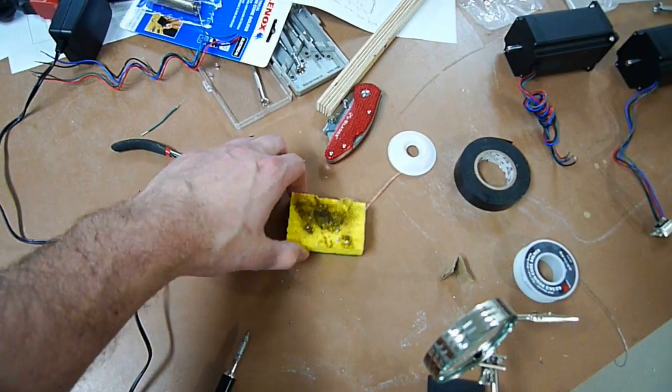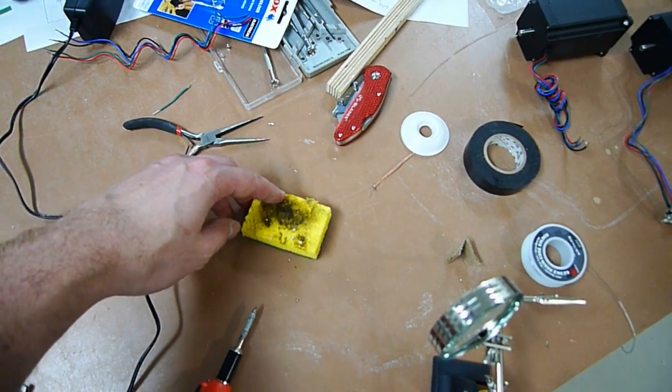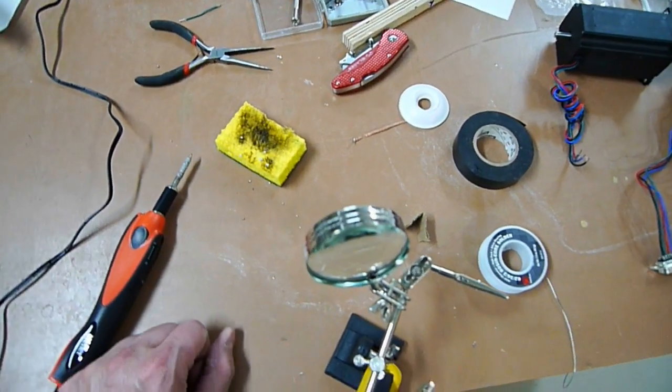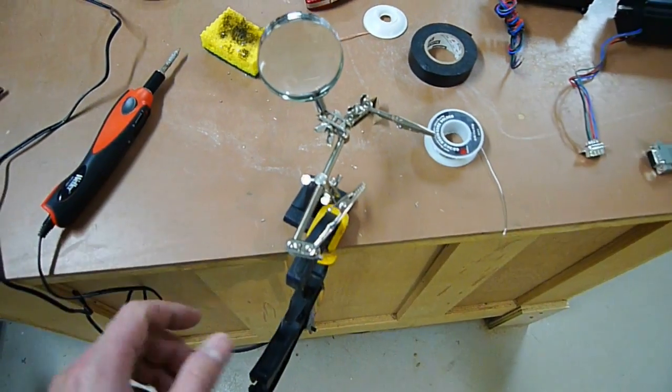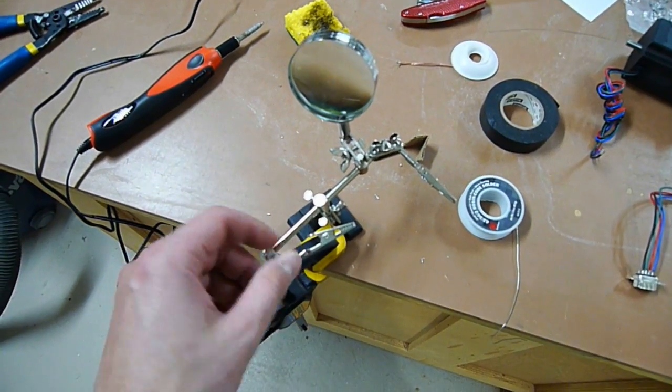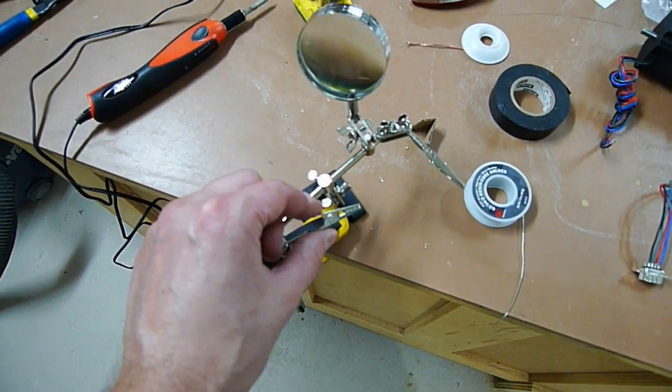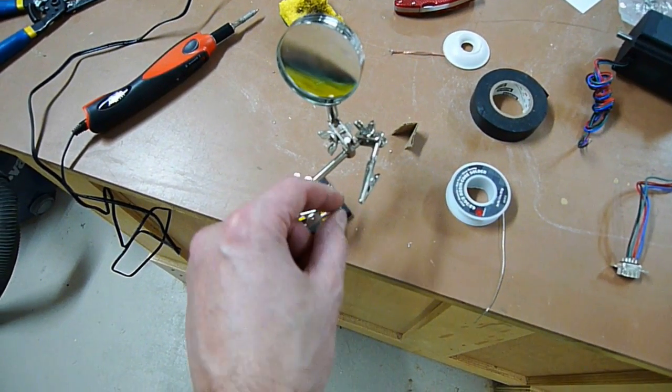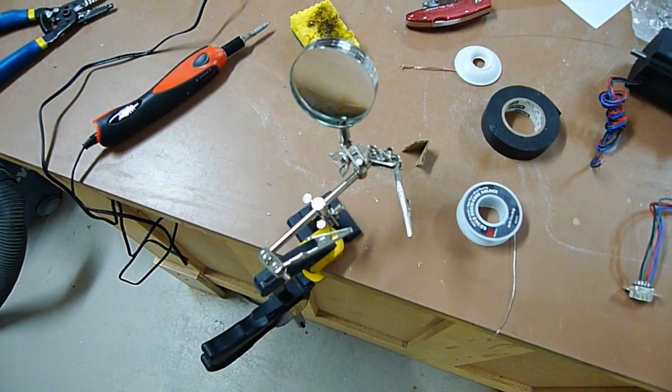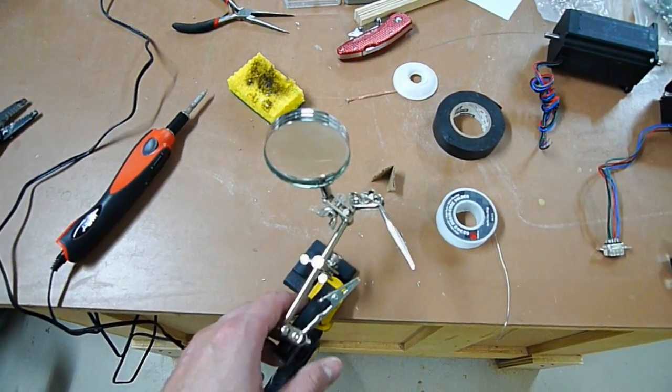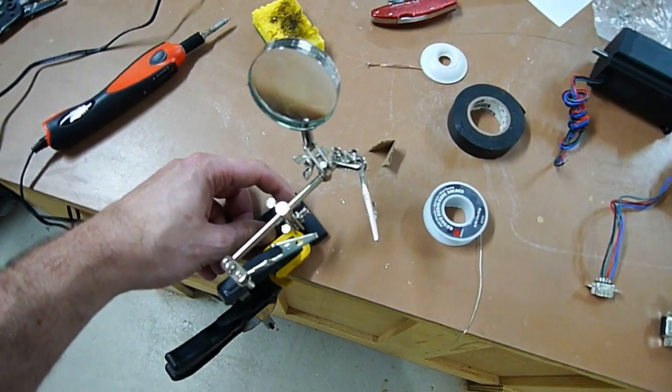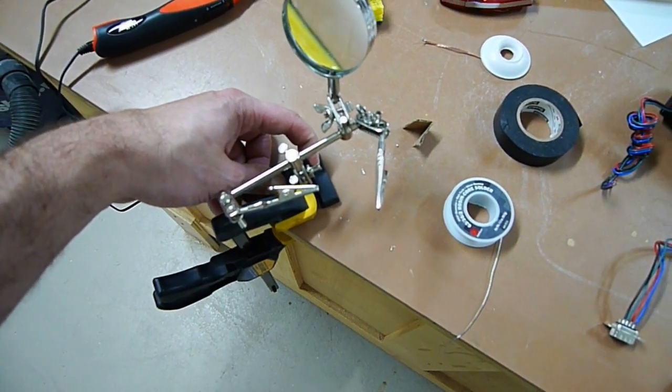You need something to clean the tip. This is just a regular household sponge that's been wetted, and you'll come over there and clean the tip every now and then. This is called something like a helping hand. It's alligator clips and a magnifying glass, but it allows you to hold wires into the terminal itself to get the stuff soldered together. I don't really use the magnifying glass too much, but I do have it clamped to the bench. It helps out a lot.